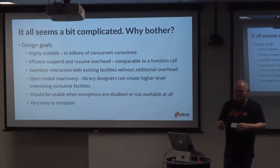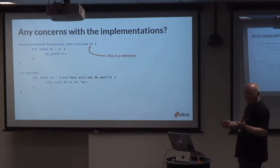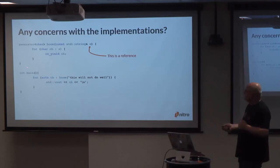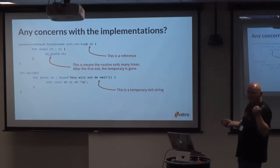There are a couple of gotchas though. Consider this function: a generator of chars that takes a const string reference and yields each character. Very straightforward. But when you call it with a string literal like this and output the character — it looks innocent, but this is a reference, and the literal creates a temporary. With yield, this is a function that will exit many times, and after the first exit the temporary is gone. So this is a dangling reference that will leave you in trouble.